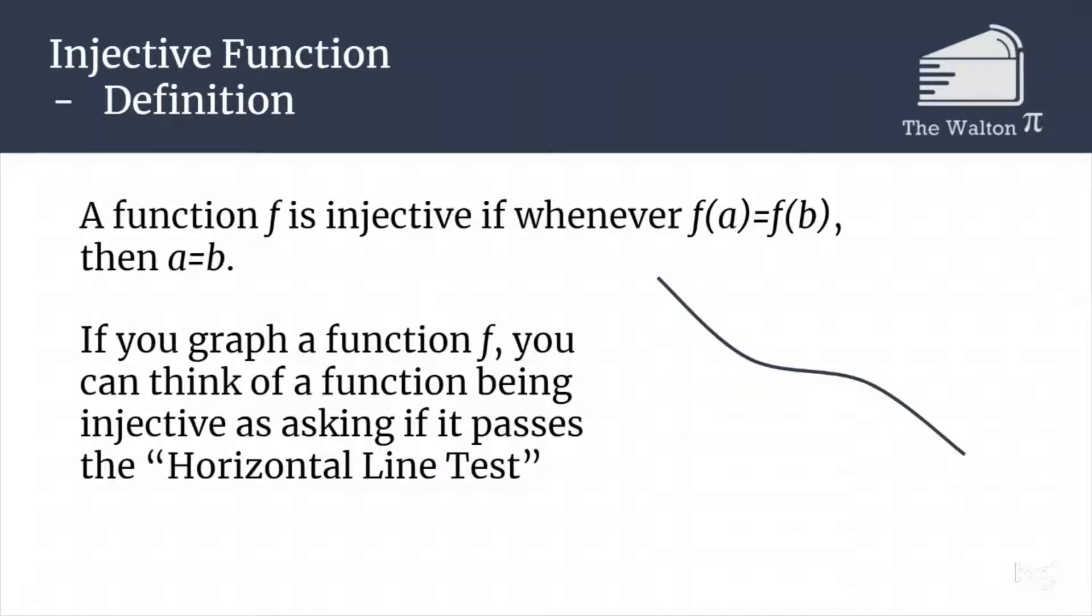If we look at this graph of a function, if we go through and plot a horizontal line, no matter where we put that line, it is always going to intersect the graph exactly one time. So this is going to be injective because having the same output implies that we have the same input.